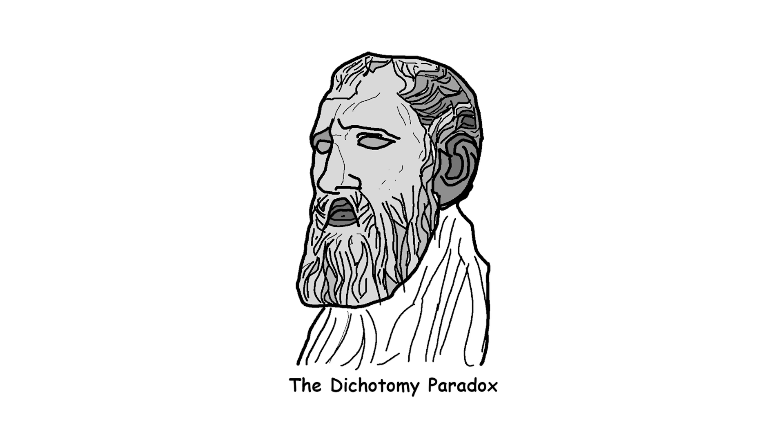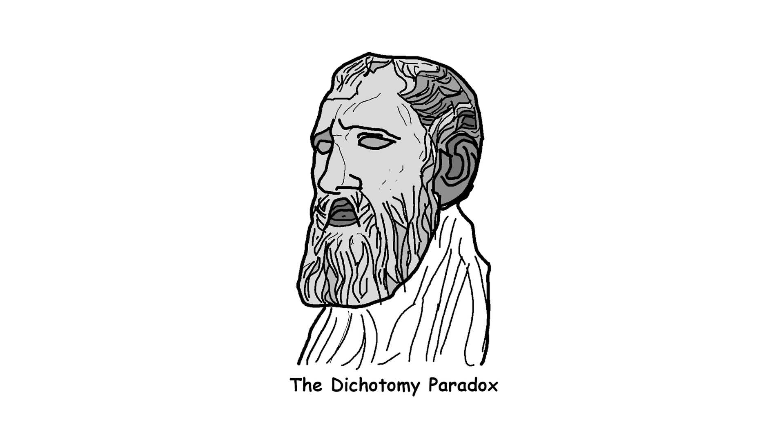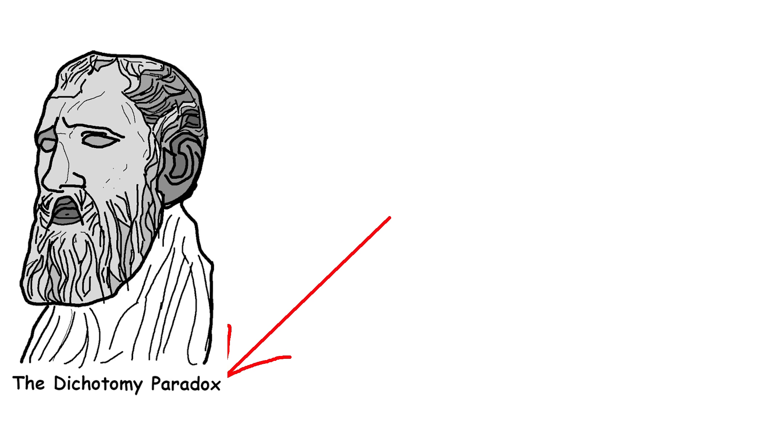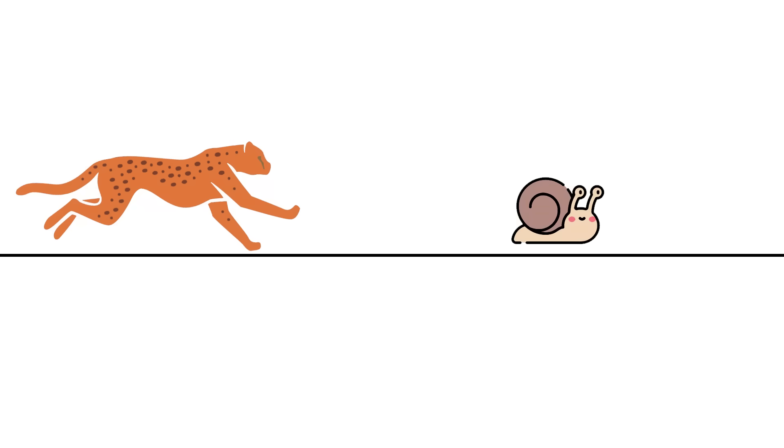The Dichotomy Paradox. Zeno's paradoxes are a set of philosophical problems that question how motion is possible. The Dichotomy Paradox is one of them. In the paradox of the cheetah and the snail, a cheetah is in a race with an espresso-charged snail.